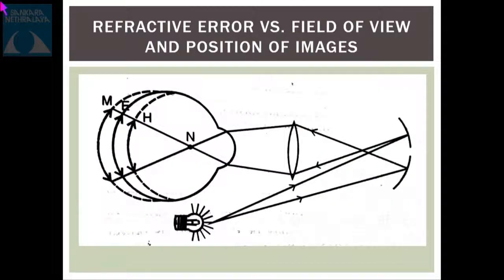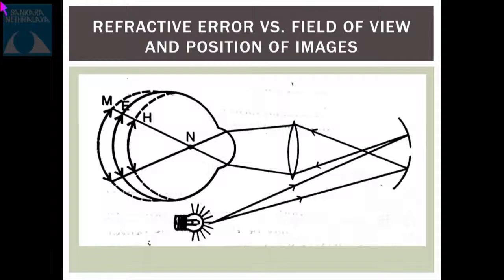In a patient who is emmetrope, hypermetrope, or myope, the field of view is not the same. Compared to an emmetrope, if the condensing lens is at the same distance from the anterior surface of the cornea, the field of view is smaller in a hypermetrope because of the smaller size of the eyeball. Whereas for the same distance, the field of view in a myope is larger because of the larger size of the eyeball.